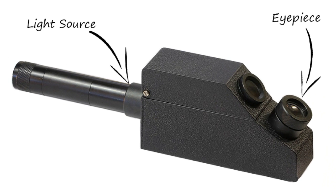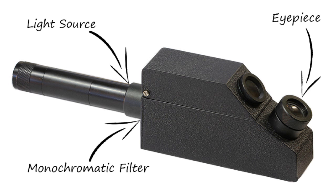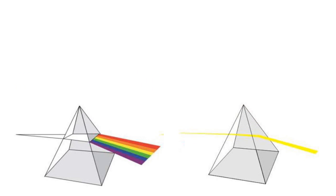But first one more point about this light source. The more accurate refractometers will pass the light first through a monochromatic filter. We could still use white light but we will get a more precise reading with only one color of the spectrum.